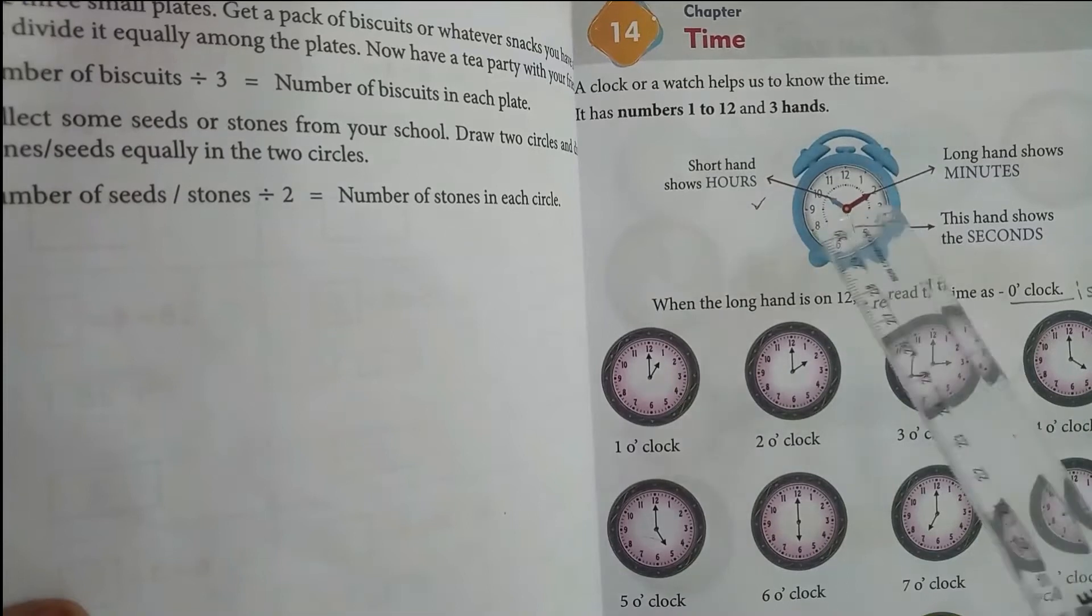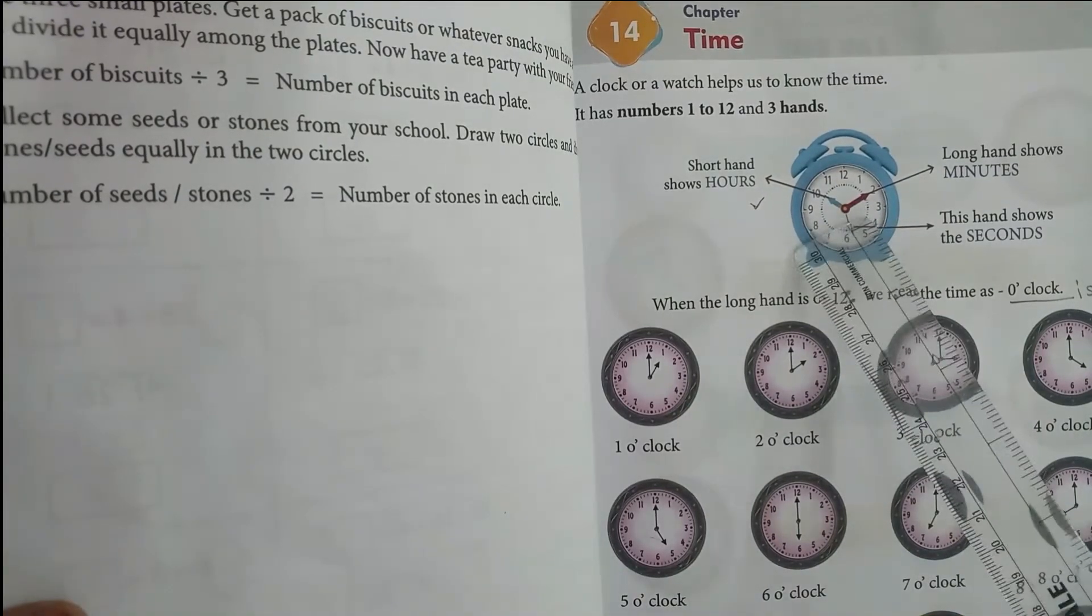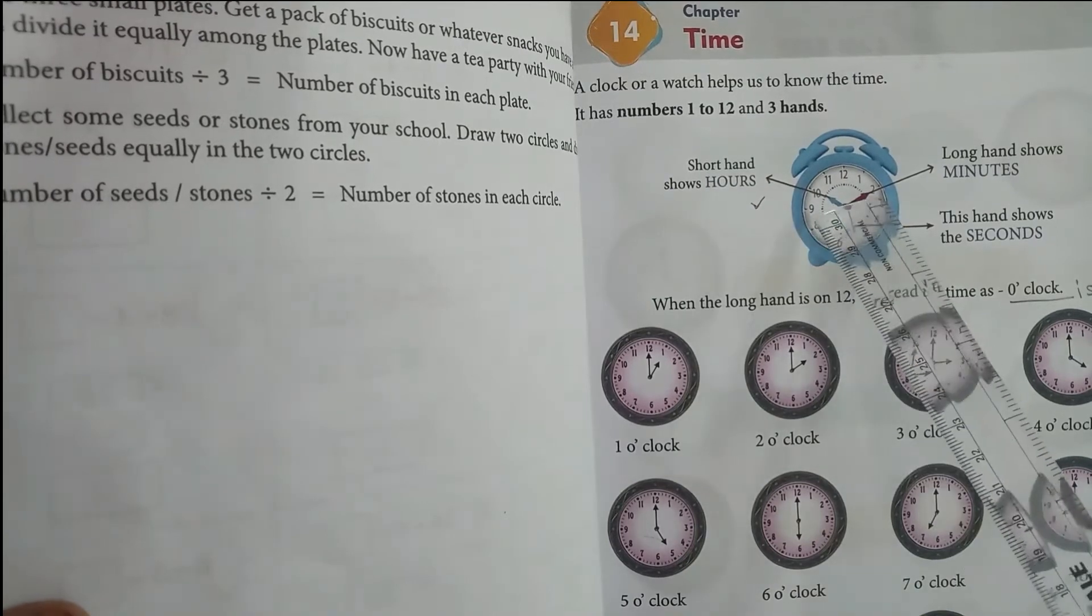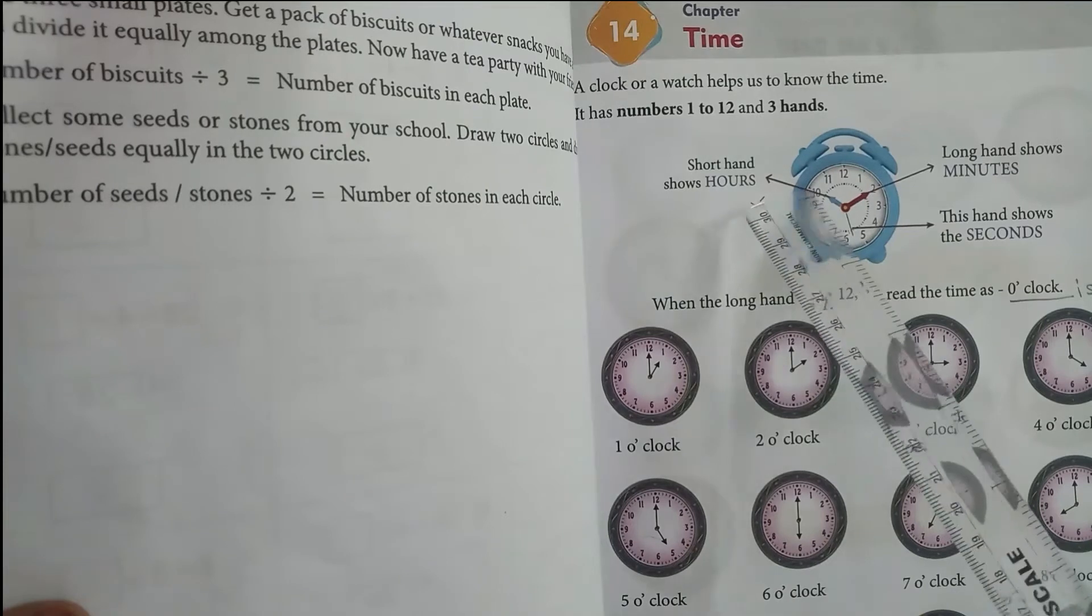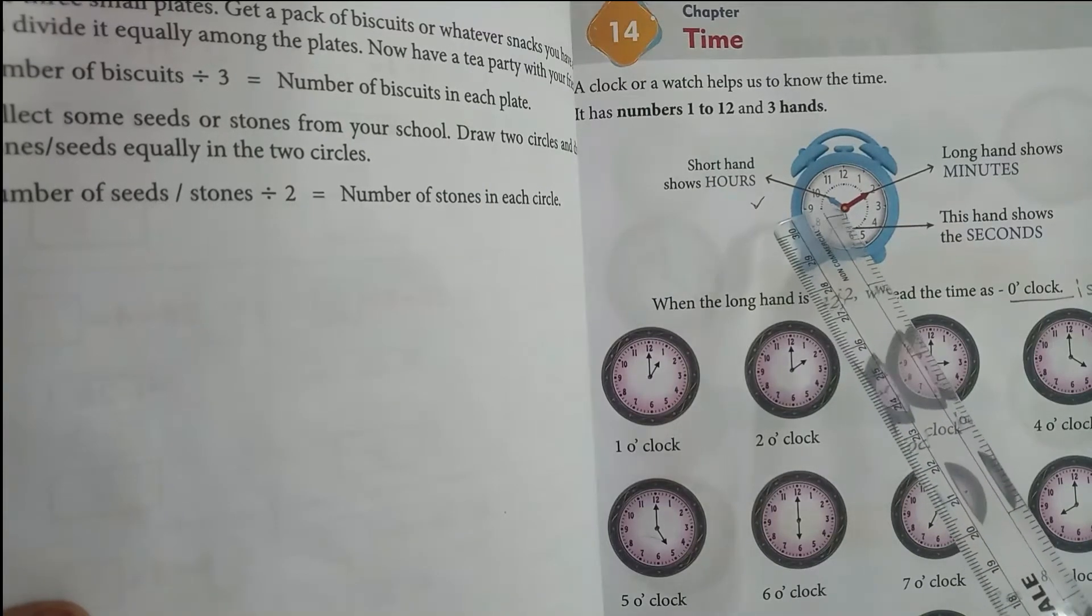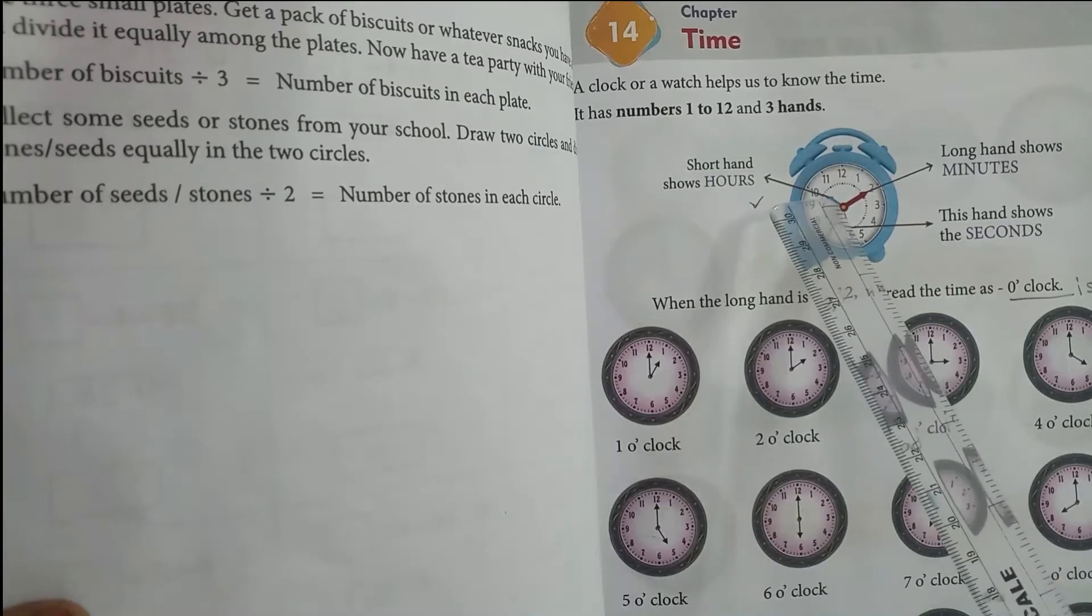See, this is a clock. In this clock we shall see three hands: one in blue color, red color, and black. This blue colored hand is the short hand, and it shows hours.